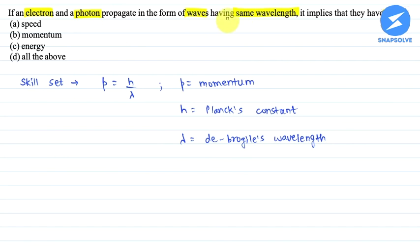The electron and photon are both in the form of waves. They will have certain wavelength, which is the same given. H is constant. For both, the lambda is the same and h is the same. The momentum will be the same.